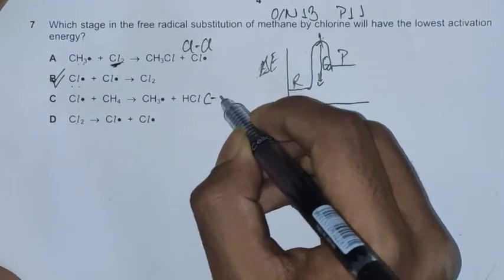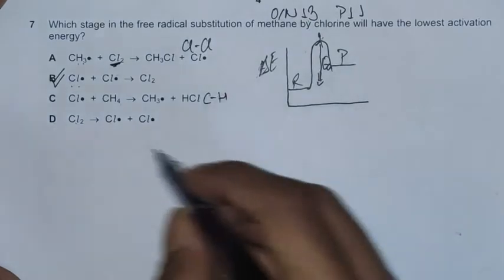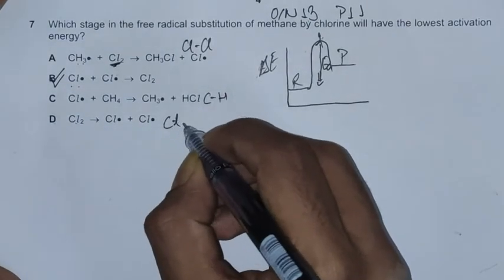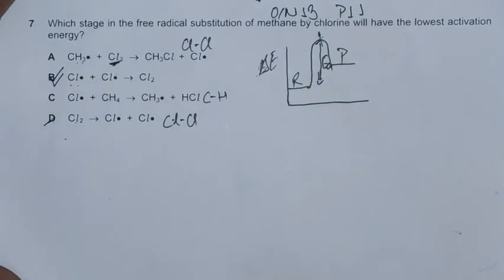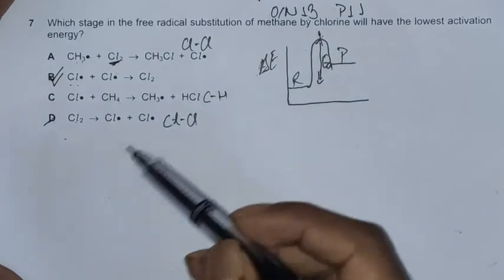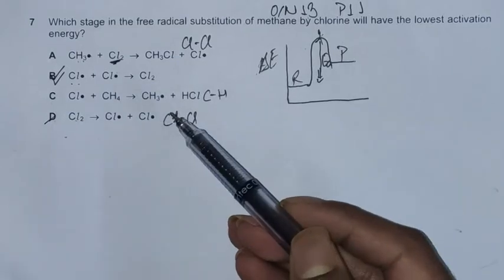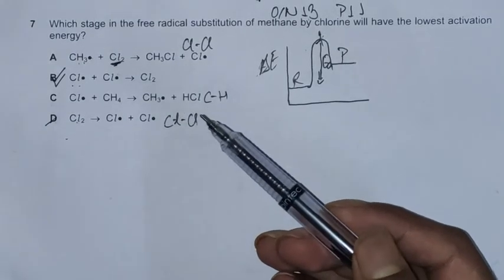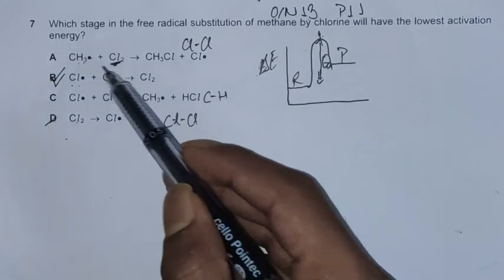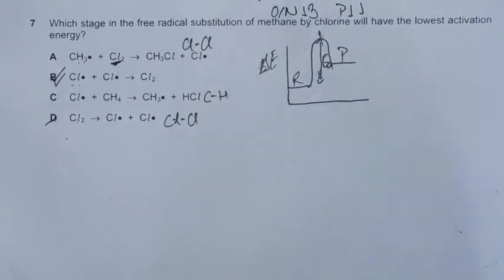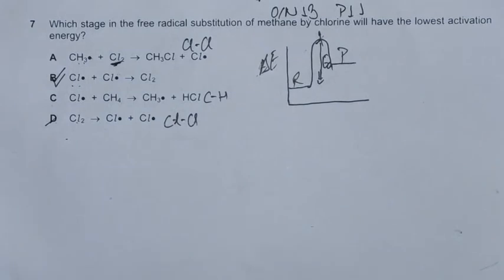In option C, we have to break carbon-hydrogen bonds. In option D, we have to break Cl-Cl bonds. Since option D is the worst possible option, we'll reject it. Option D has no free radicals, which means it has a relatively high activation energy. In option A, we have to break the Cl-Cl bond.